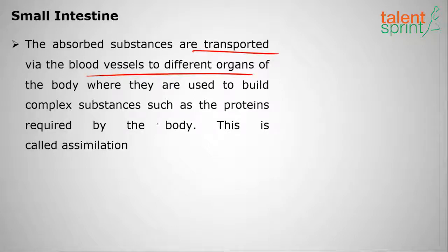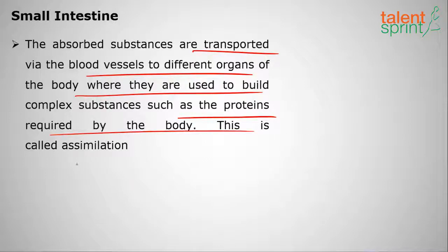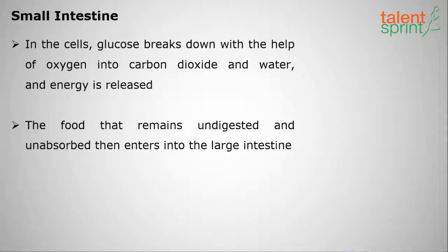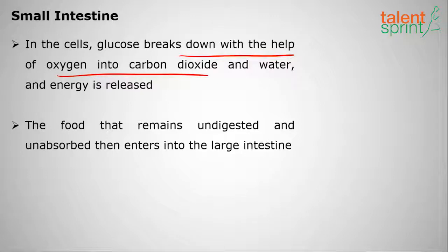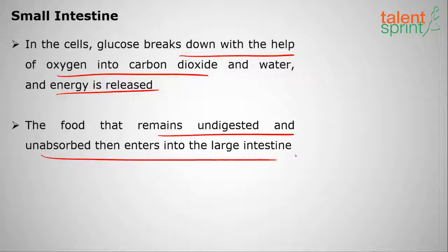The absorbed substances are transported by blood vessels to different organs of the body, where they are used to build complex substances like proteins — this process is called assimilation. In the cells, glucose breaks down with the help of oxygen into carbon dioxide and water, releasing energy, which is used for the various functions of the body.